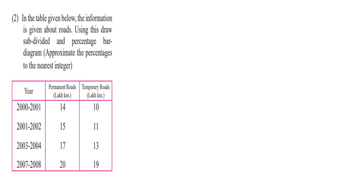Moving to the second question. In the table given below, information is given about roads. Using this, draw a subdivided and percentage bar diagram. Approximate the percentage to the nearest integer. In this question, you have to draw two graphs using the same data. Percentage bar diagram we have learned in the first sum, so you will do that as homework. I will teach you the subdivided bar diagram.